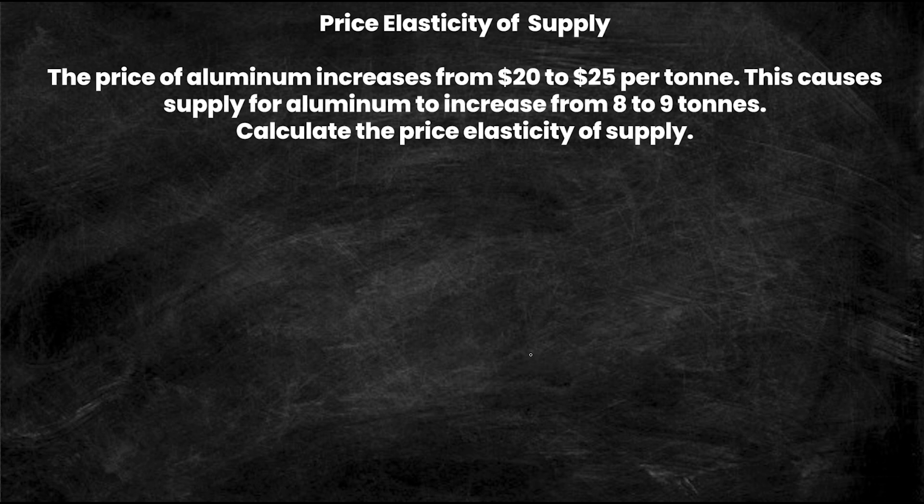So the problem is as follows. The price of aluminum increases from $20 to $25 per ton. This causes the supply for aluminum to increase from 8 to 9 tons.